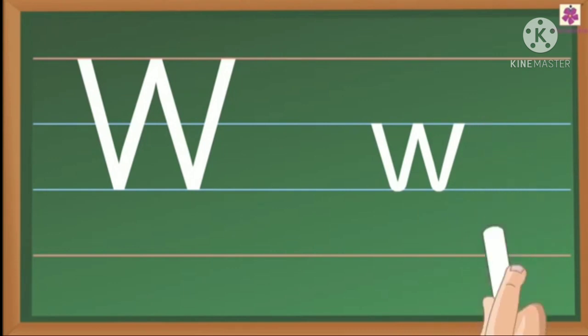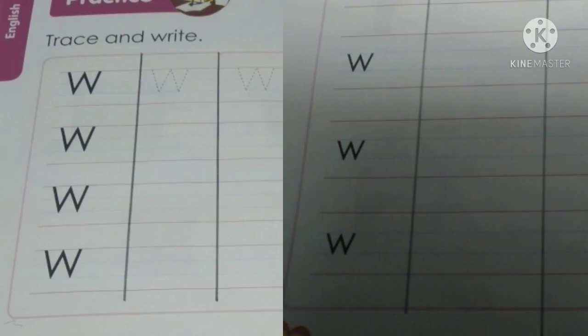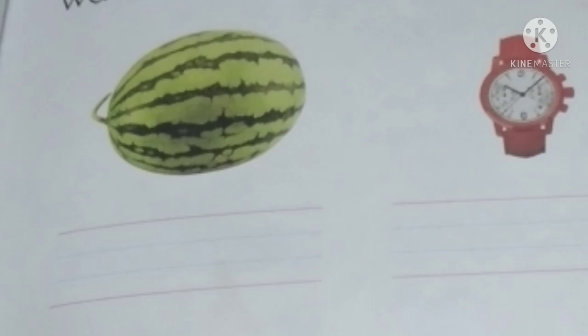Both have the same sound W. Write and Write. Write capital W below the watermelon. And, small W below the watch.